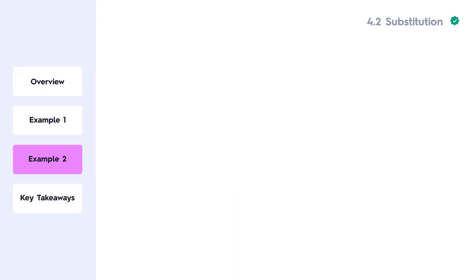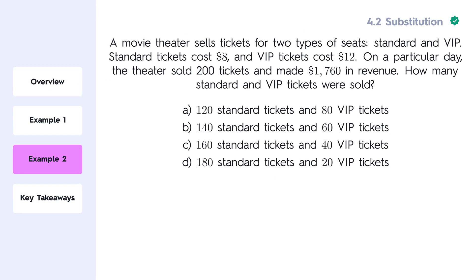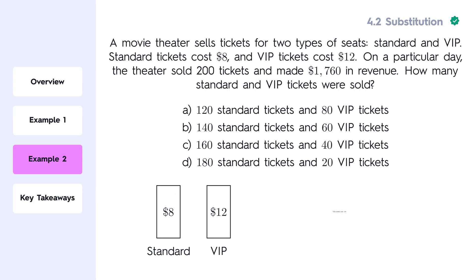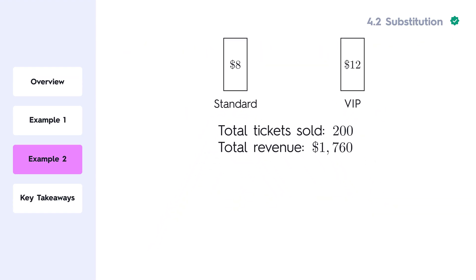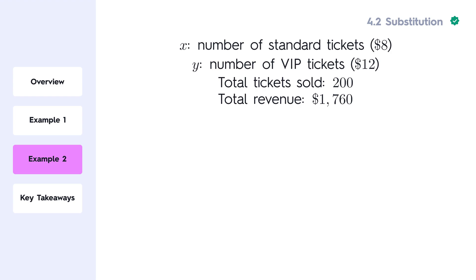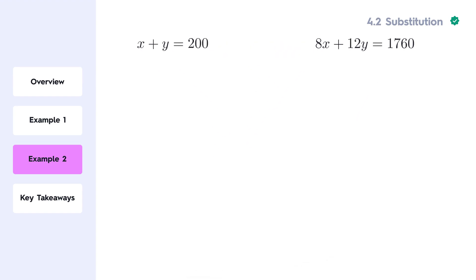Let's now tackle a more challenging example. A movie theater sells tickets for two types of seats: standard and VIP. Standard tickets cost $8, and VIP tickets cost $12. On a particular day, the theater sold 200 tickets and made $1,760 in revenue. How many standard and VIP tickets were sold? Let's first define our variables. Let x represent the number of standard tickets sold, and y represent the number of VIP tickets sold. We can now set up two equations based on the information provided. The first equation comes from the total number of tickets sold, which is 200. The second equation comes from the total revenue of $1,760. We can now solve the system of equations using substitution.